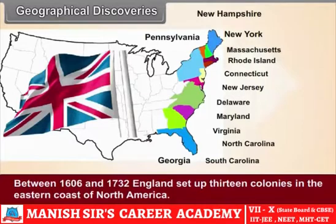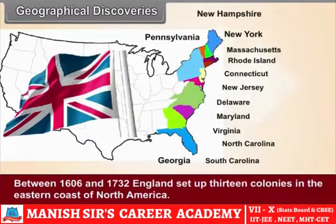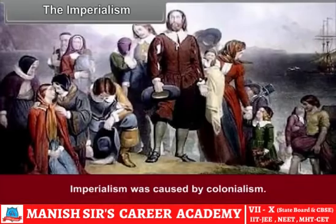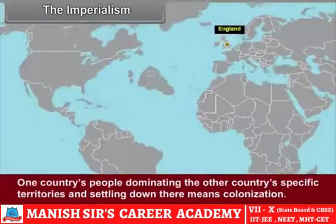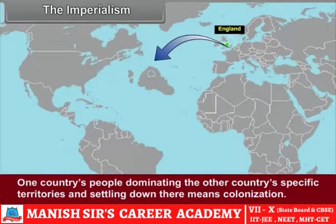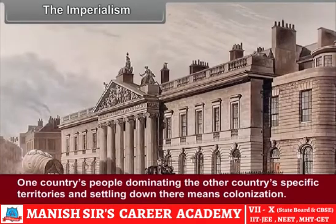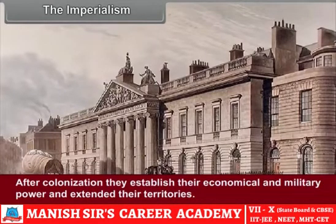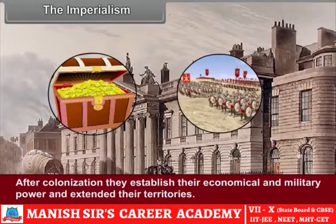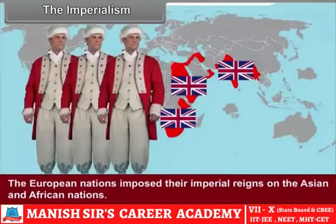Spain, Portugal, Holland, England and France set up colonies in the newly discovered regions through adventurous sailing. There began a cut-throat competition among the European nations for dominating the newly discovered regions of the world, and England was in a leading position in this process. Imperialism was caused by colonialism — one country's people dominating another country's specific territories and settling there. After colonization, they established their economical and military power and extended their territories. The European nations imposed their imperial means on the Asian and African nations.